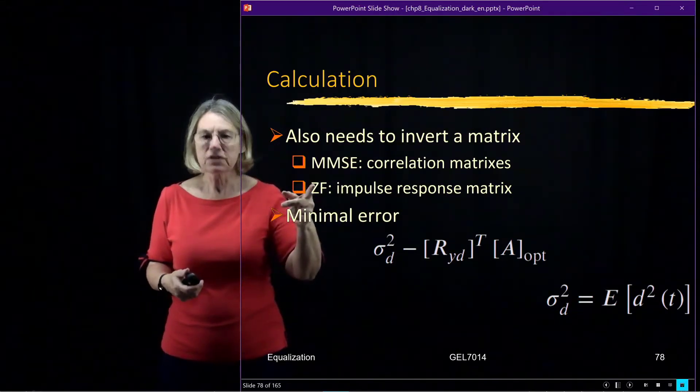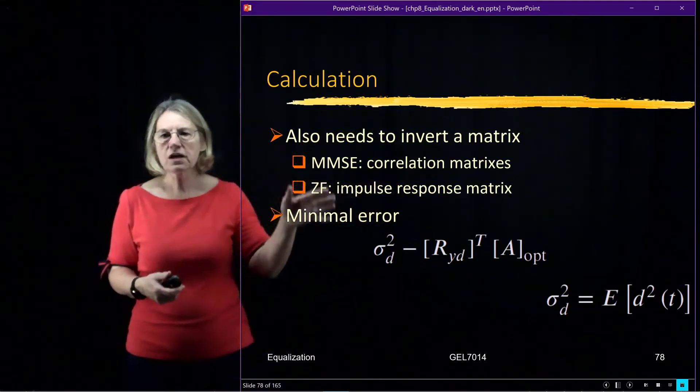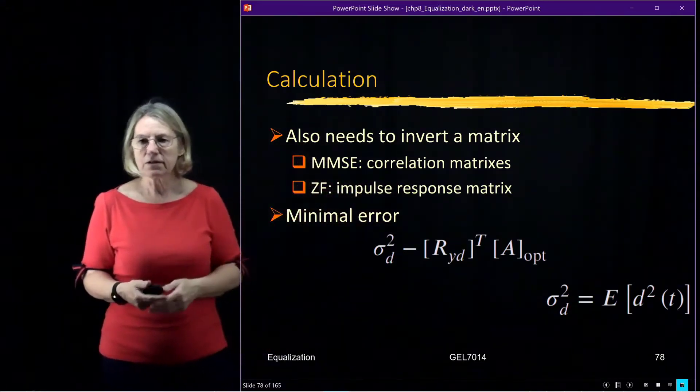And in terms of the zero-forcing, it was the impulse response matrix that we inverted. So in terms of complexity, they're pretty similar.